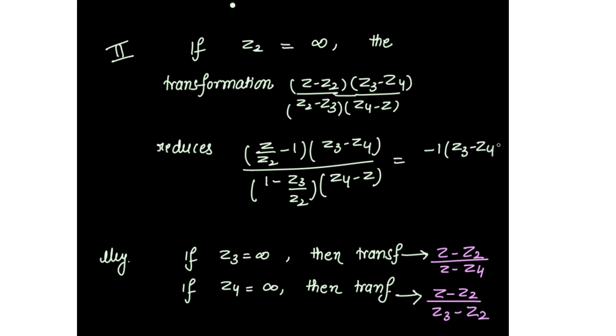So we get negative 1 times z3 minus z4 over z4 minus z, which reduces to z3 minus z4 over z minus z4. Similarly, if z3 is infinity the transformation reduces to z minus z2 over z minus z4, and if z4 is infinity the transformation reduces to z minus z2 over z3 minus z2.